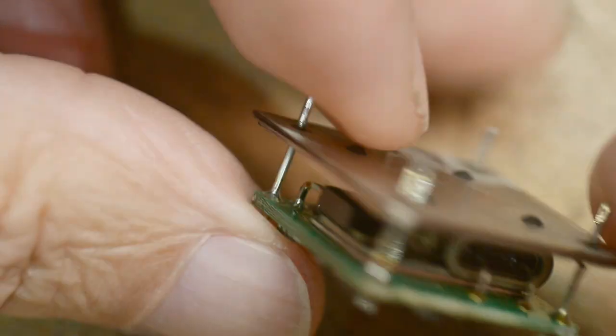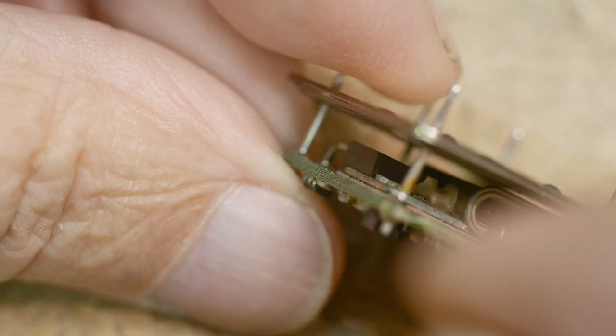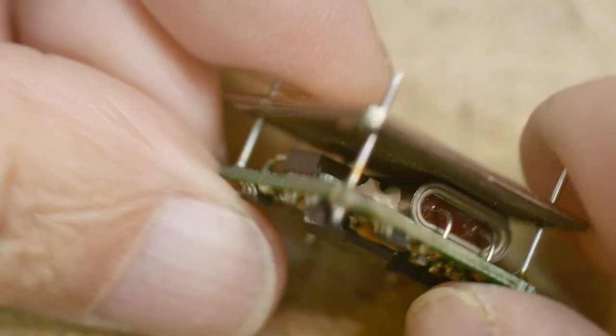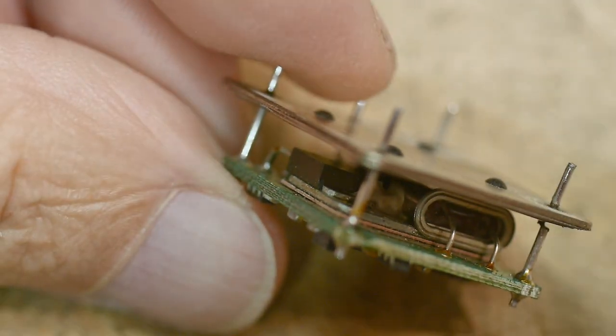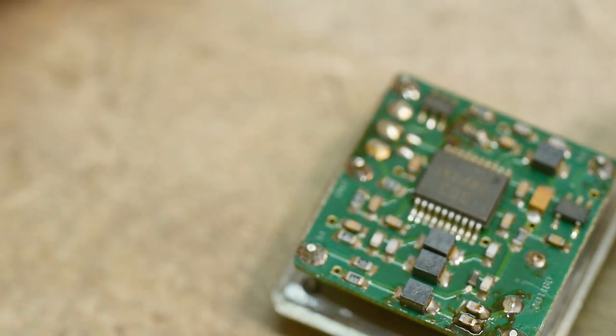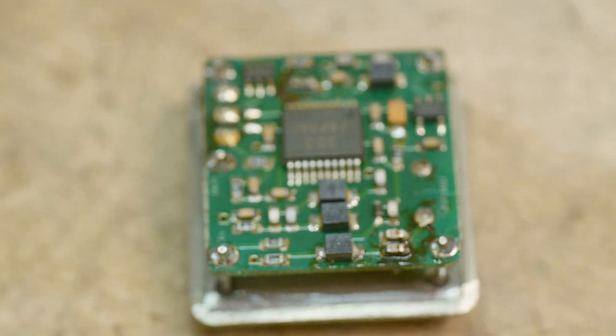So this is the heating element and it's on a copper slab over to the crystal. So that's the quote oven, and it's underneath the circuitry.